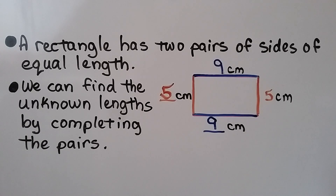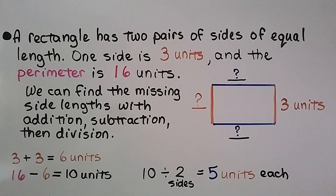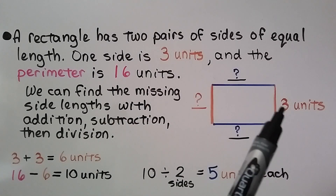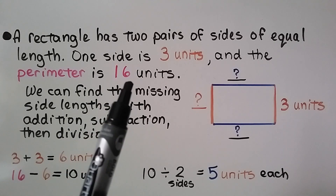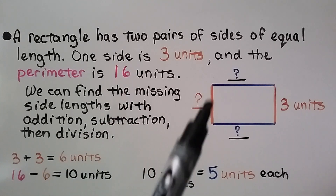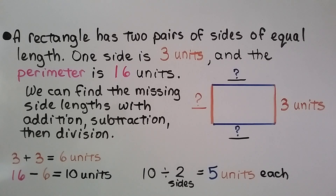We have two pairs of sides of equal length. It's telling us that one side is 3 units and that the perimeter is 16 units. We don't know what the other measures are, but we can find the missing side lengths with addition, subtraction, then division.